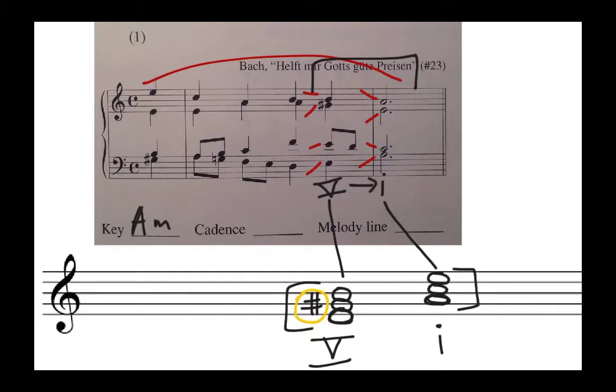Now, we just need to look at our three points here, here, and here, to determine if they're the roots of their respective triads. If they are, we have a perfect authentic. If not, it'll be an imperfect authentic.